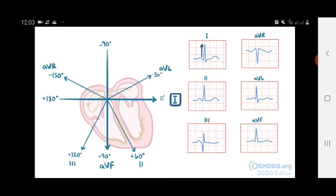Lead 1 here is clearly positive, which means that the axis is somewhere over here. And lead AVF is positive as well, putting the axis in the lower left quadrant between 0 and plus 90 degrees, which is a normal axis. To be a bit more precise, it looks like lead 3 is the closest to being isoelectric, which means it has equal positive and negative deflections.